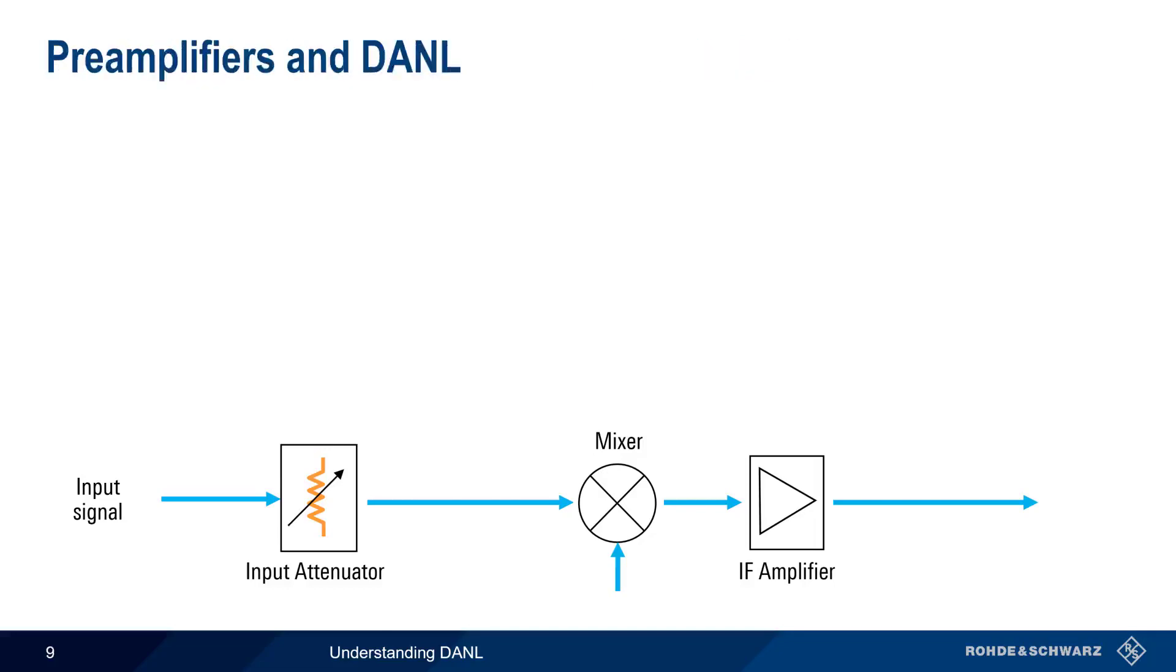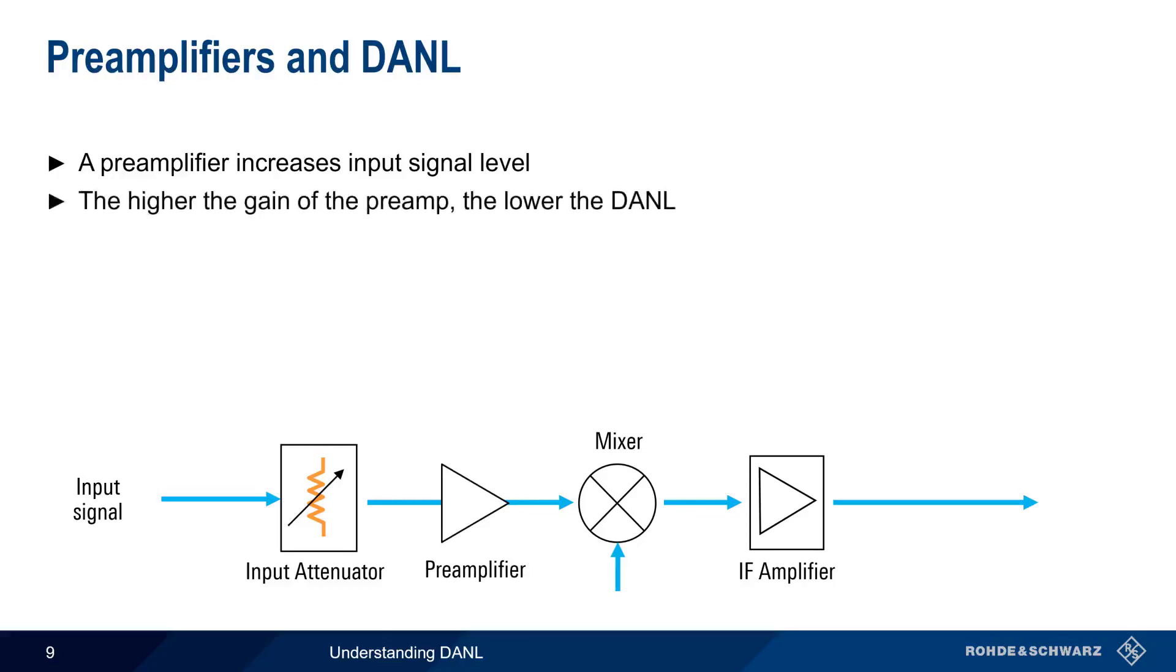Another spectrum analyzer component that can affect DANL is a preamplifier, which is used to increase the input signal level. This preamp is usually located after the input attenuator. In general, the higher the gain of this preamp, the lower the analyzer's DANL. Care should however be taken when choosing preamplifier gain.